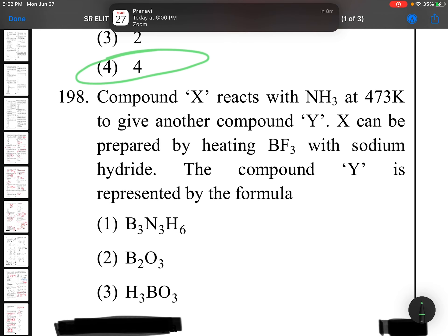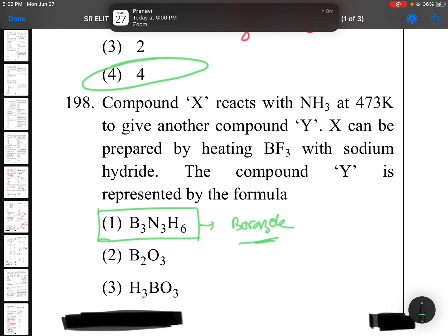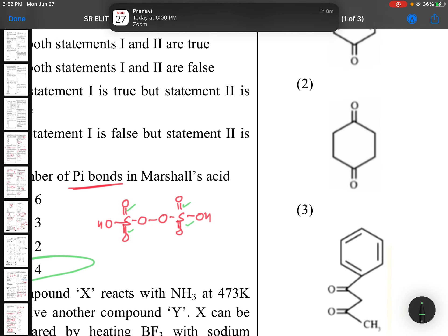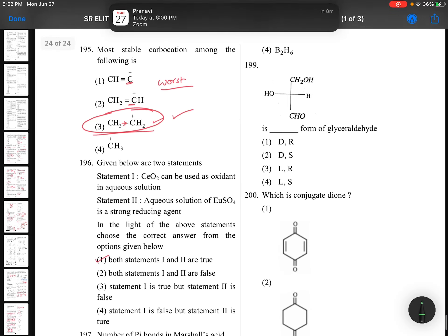Question 198: Compound X reacts with NH3 at 473 Kelvin to give compound Y. X can be prepared by heating BF3 with sodium borohydride. The compound Y is represented by the formula - this is B3N3H6 borazole. Group 13 compounds.